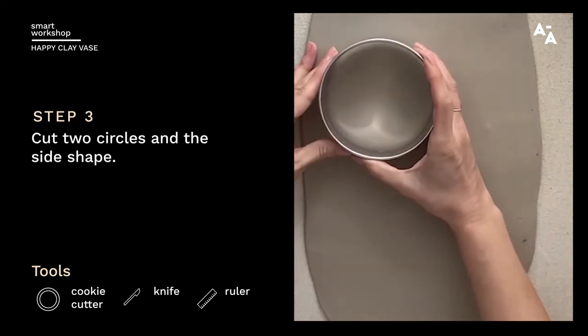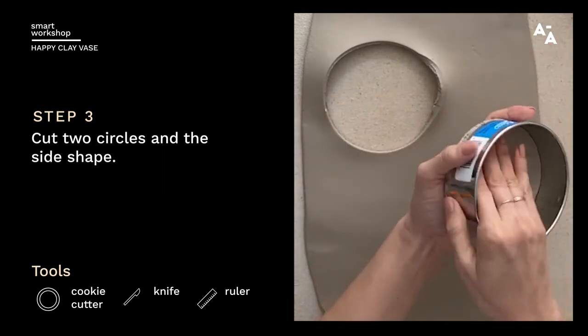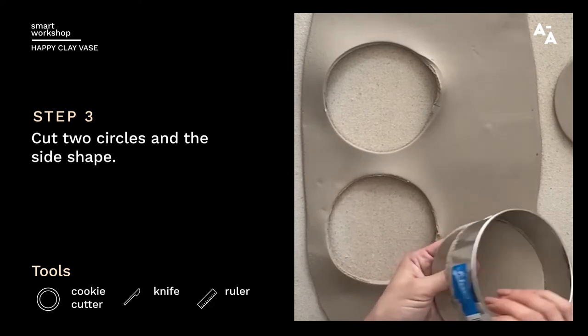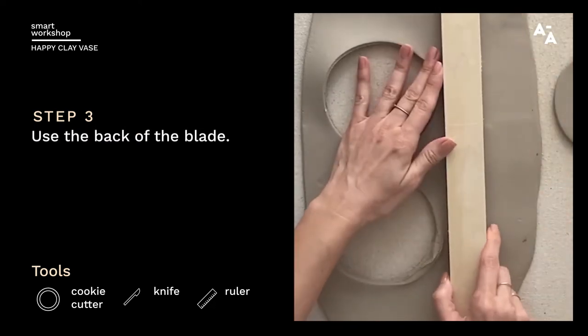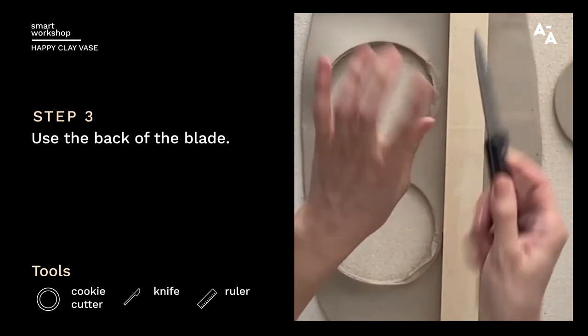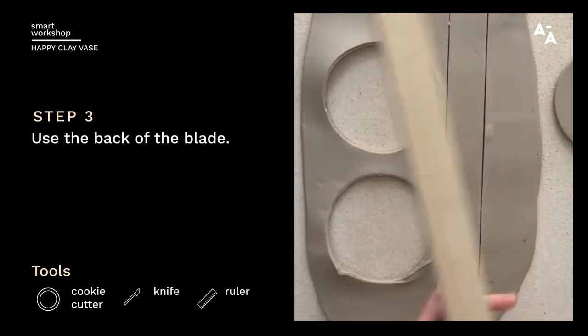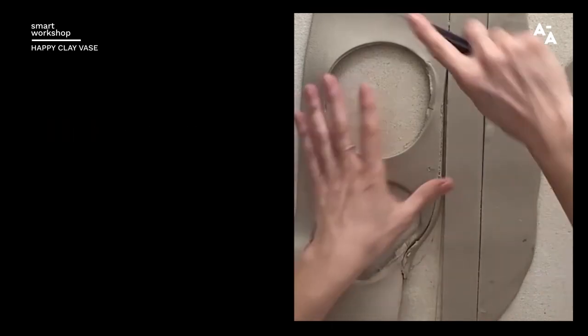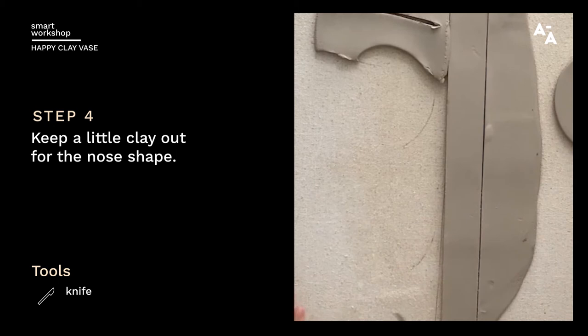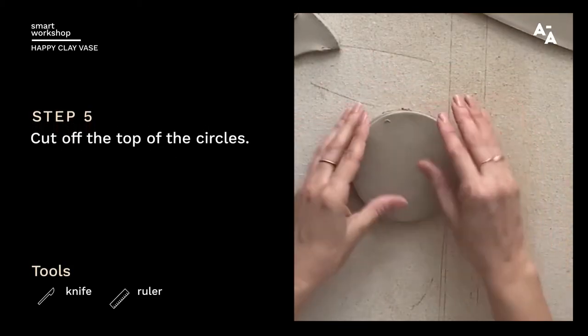And I'm going to use my cookie cutter and cut two circles. And my straight edge and the back of my knife to cut my side pieces. I'm going to keep a little clay out to use for my nose. And now we have our two perfect circles. Perfect enough.